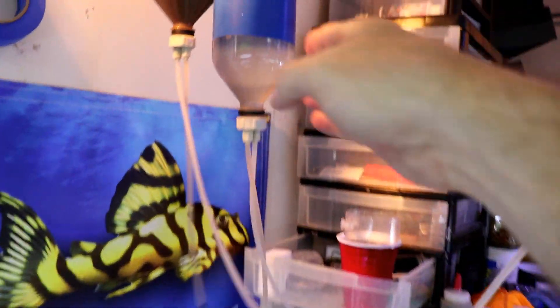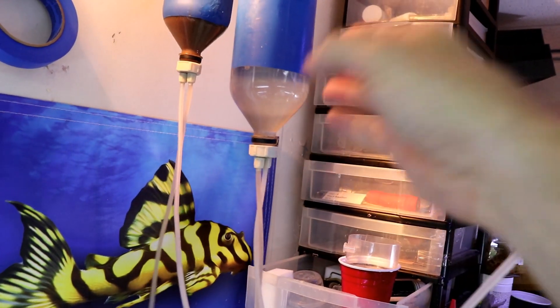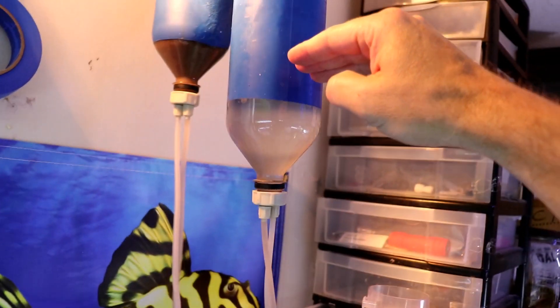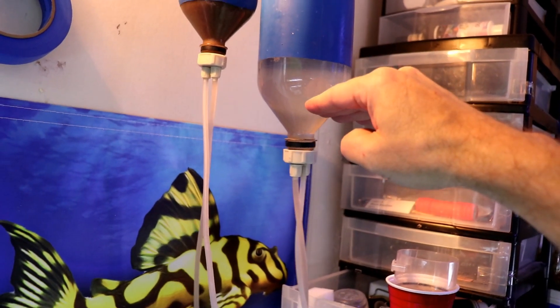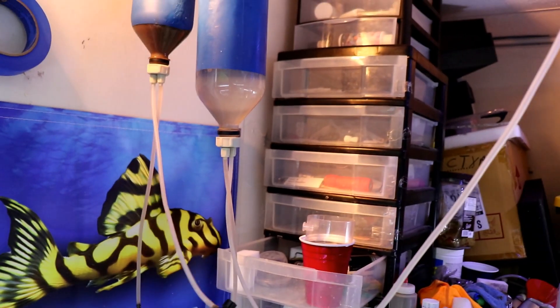When I come in, the first thing I'll do is I'll turn the pump off and then I'll let this thing set for probably at least 30 to 45 minutes. And what you'll see happening, all the baby brine shrimp will all settle down here into the bottom and then all the eggs will float to the top.